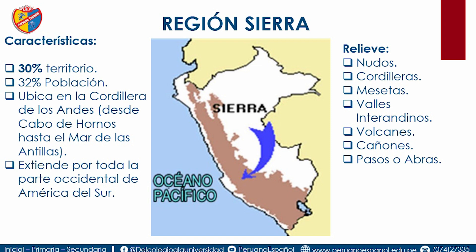Una meseta permite el desarrollo de la ganadería de équidos. Tenemos la meseta del Collao en Puno, la meseta de Bombón en Junín, la meseta de Parinacochas en Ayacucho, la meseta de Castro Virreyna en Huancavelica y la meseta de Marcahuasi en Lima. Los valles interandinos sirven para el desarrollo de la agricultura; tenemos los valles del Urubamba en Cusco, los valles del Mantaro y los valles de Huancabamba en Piura.